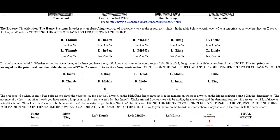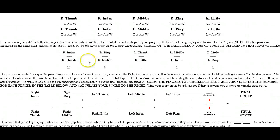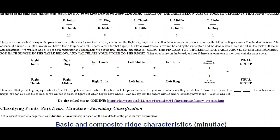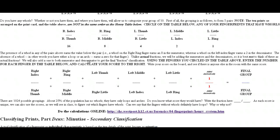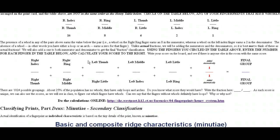I want you to read through the primary classification, the Henry system. Spend a little bit of time looking at it and see if you can understand it. We're going to talk about it in a class period or two, but I want you to read through it first. I might actually throw out a quiz question or two when we get to class on the Henry system — where I give you the indexes of what each finger has, whether it has loops or arches, and see if you can figure it out, maybe for some bonus points.